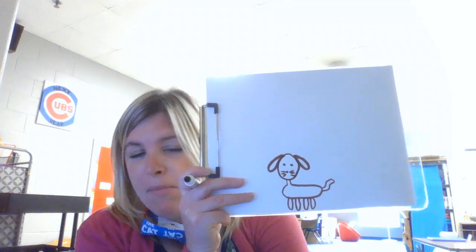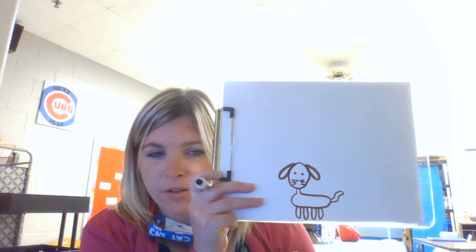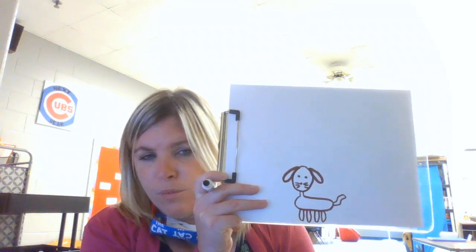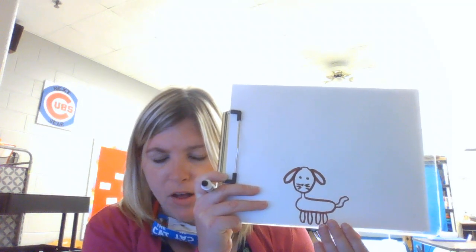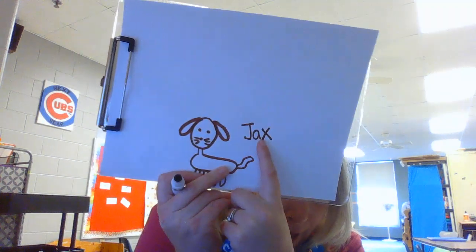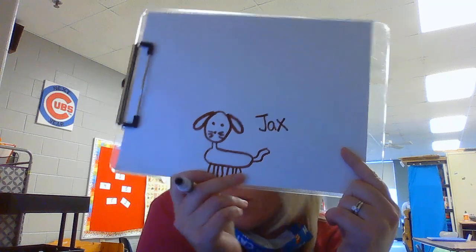Let's look at my Five W poster. It says, who is there? Do we know who's there? Yeah, this is a dog. What's the dog's name? Did I write what the dog's name is? So now I know as an illustrator, I can go back and write the dog's name. I'm going to label his name. Let's sound it out: J-A-X. Jax! So his name is Jax.